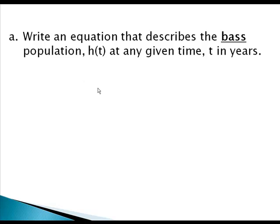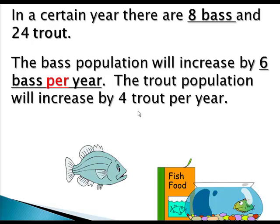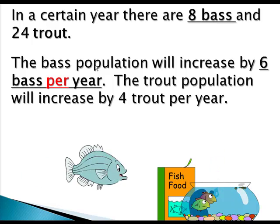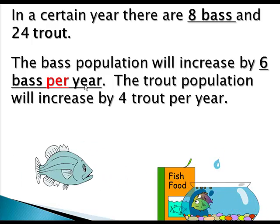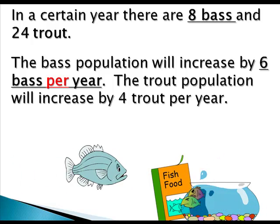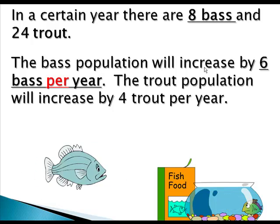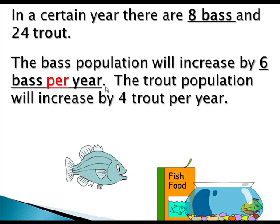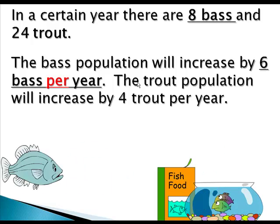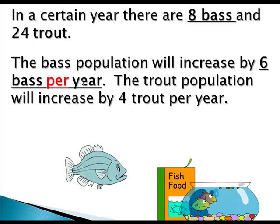So we'll take part A first — write an equation that describes the bass population at any given time. Going back to the original problem, we start with eight bass and the amount of bass will increase by six bass per year. The output will be the population and the input will be time. The bass population is dependent on time: if time is zero, I have eight bass, and as time increases the number of bass will increase by six every year.